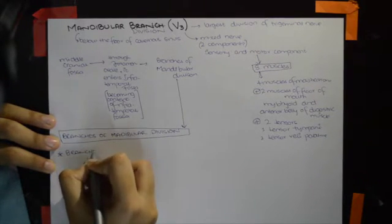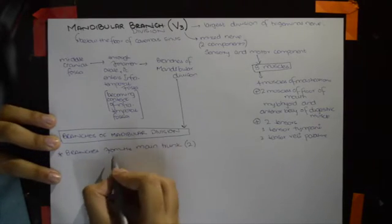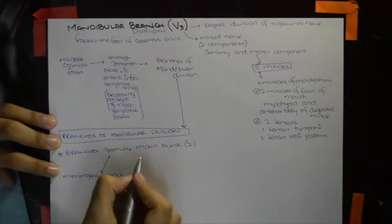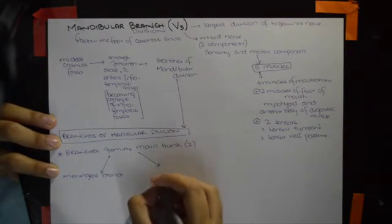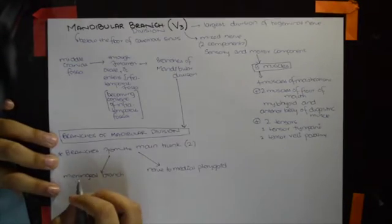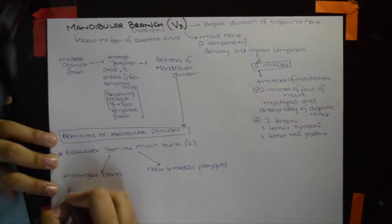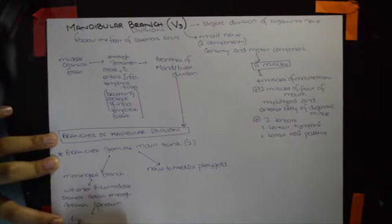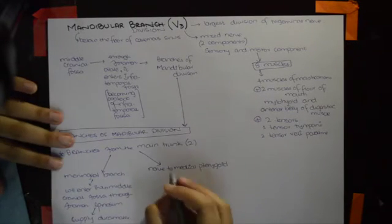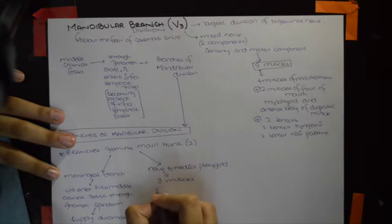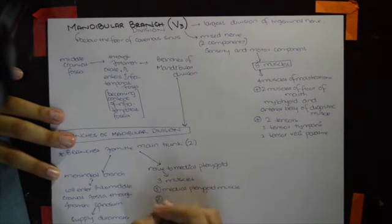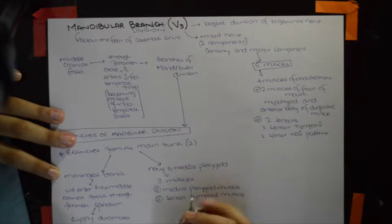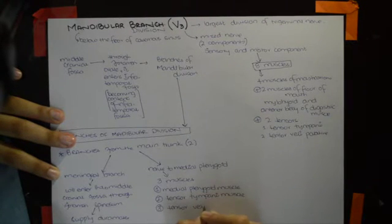The branches from the main trunk are two in number: the meningeal branch and the nerve to the medial pterygoid. The meningeal branch enters the middle cranial fossa through the foramen spinosum and supplies the dura mater. The nerve to medial pterygoid supplies three muscles: the medial pterygoid, tensor tympani, and tensor veli palatini.